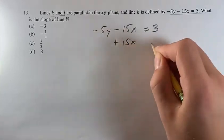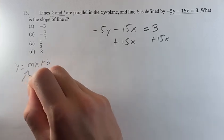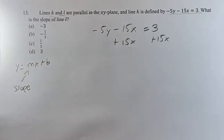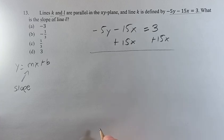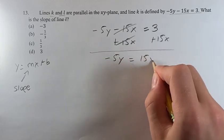What we're going to do here is get it into the form y equals mx plus b, where m is the slope. So we have to isolate y. First, by adding 15x to both sides, negative 5y is equal to 15x plus 3.